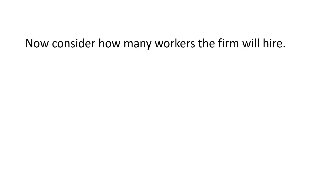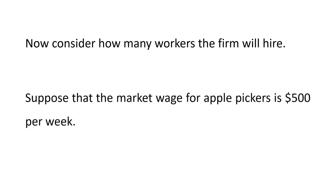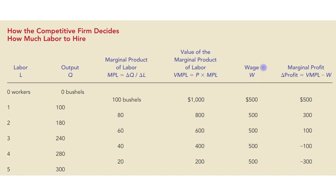Now consider how many workers the firm will hire. Suppose that the market wage for apple pickers is $500 per week. This is the market wage, denoted by capital W.